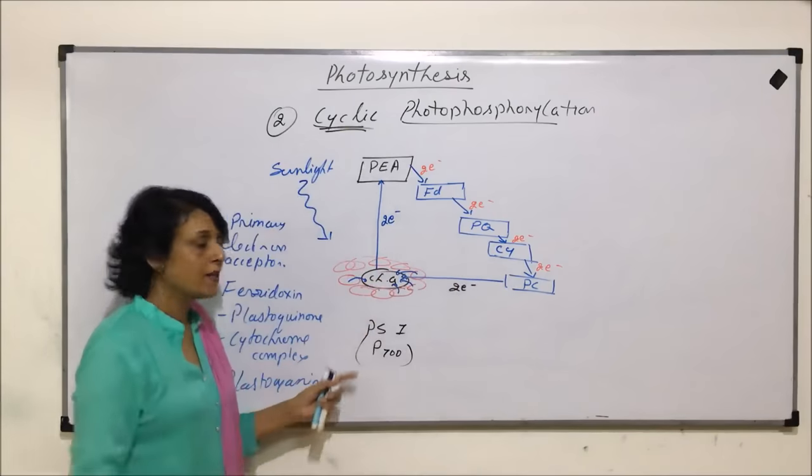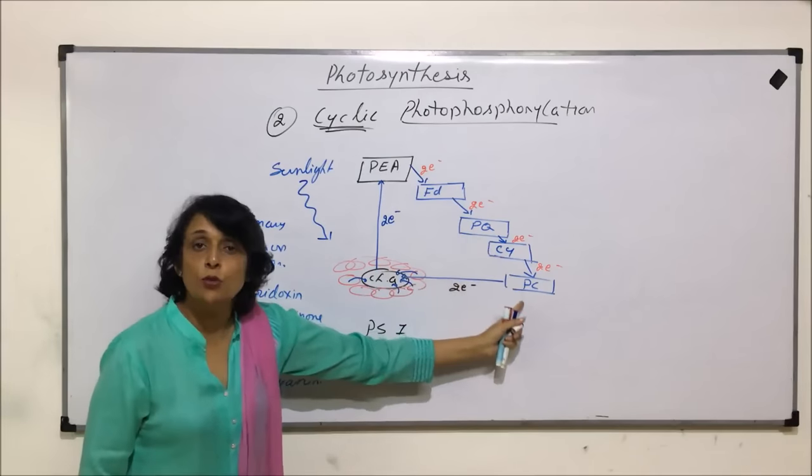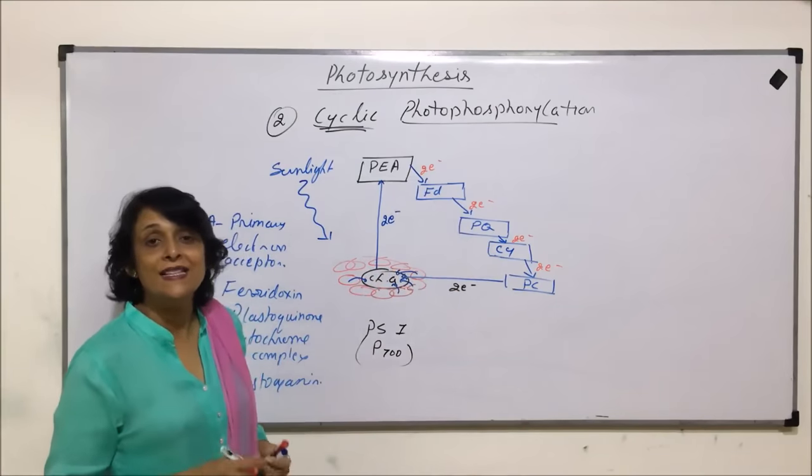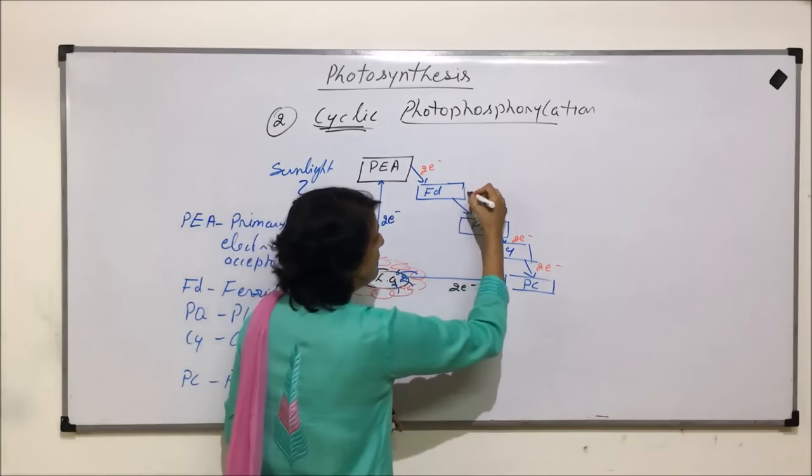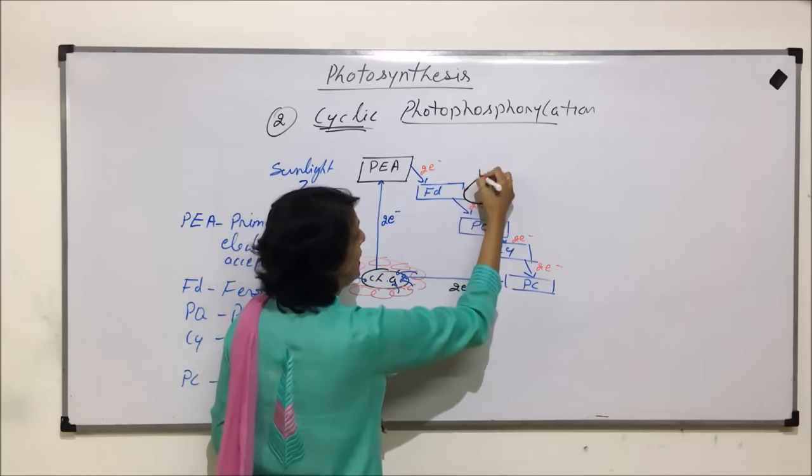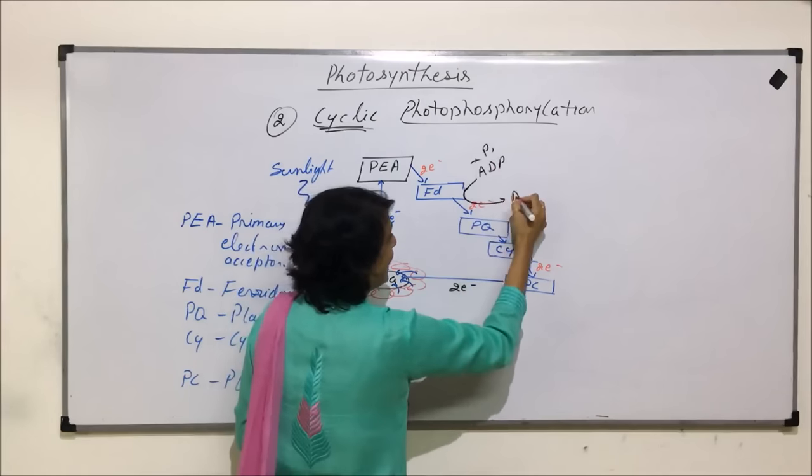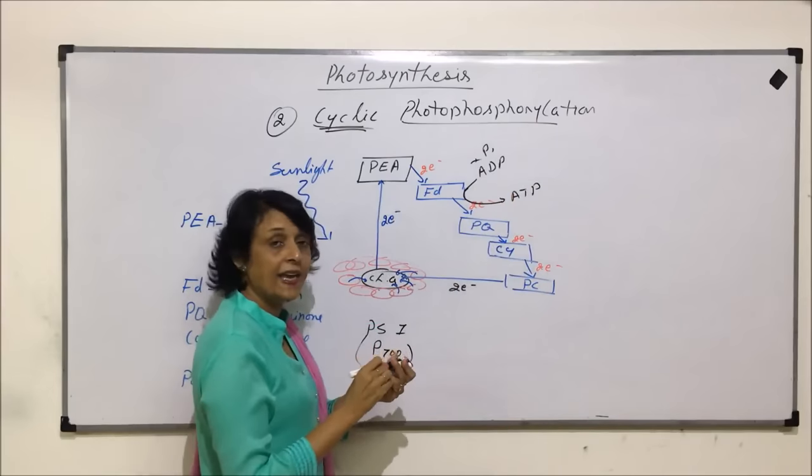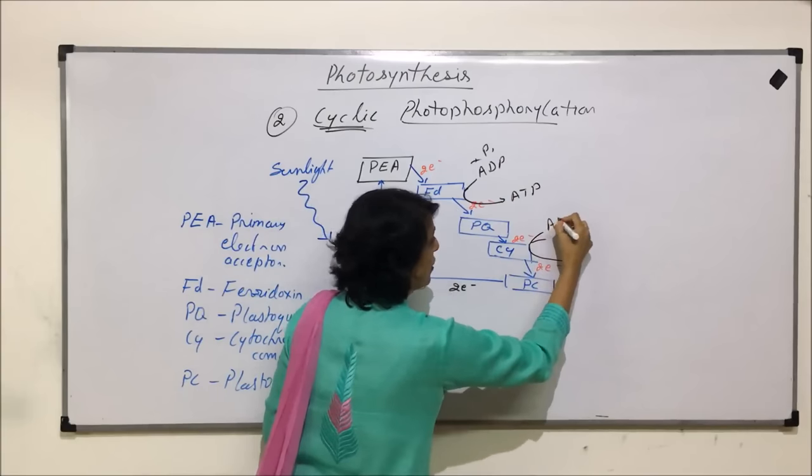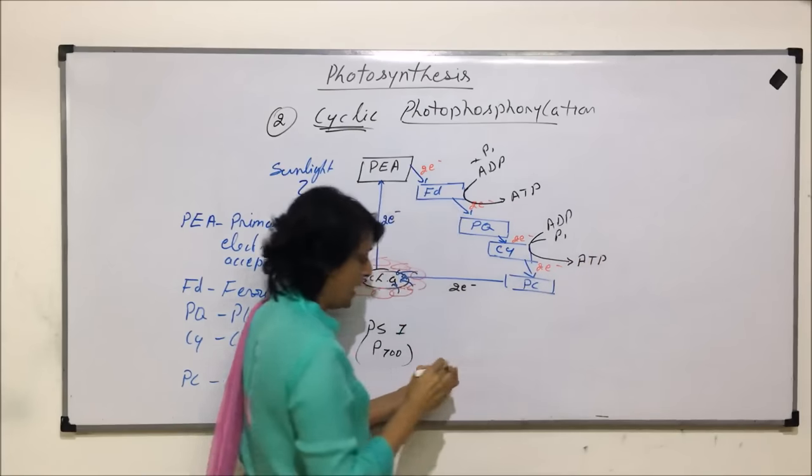Now, when it is passing through these electron acceptors, it releases, this pair of electrons releases energy at two places. One, when it is moving from ferredoxin to plastoquinone. Here, ADP and inorganic phosphates, they are combined, and ATP is synthesized. And second is when it is going through cytochrome. So, here also, ADP combines with inorganic phosphate, and we get ATP. So, in this case, there are two places where ATP is getting synthesized.